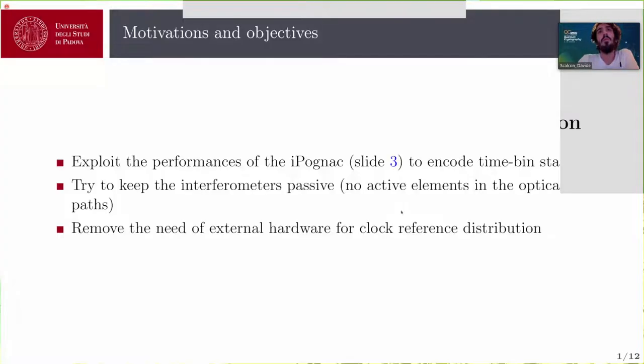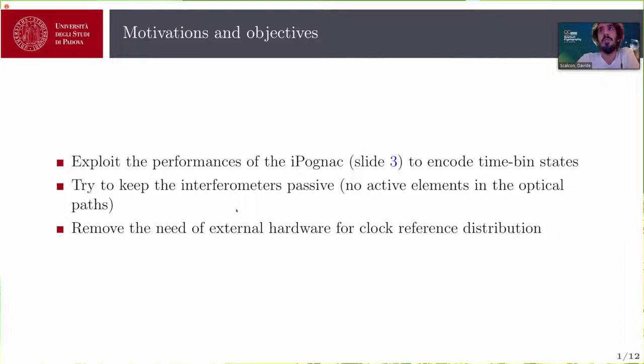So again, we want to try to use the iPodnet, which is an operational encoder to encode time-bin states. Also, we wanted to try to use the battery pass interferometers, so interferometers that do not have active components in the optical path. And also, we wanted to try to remove the need of a system that shows the clock between the two of us in the QKD experiment.